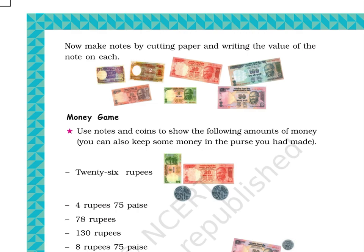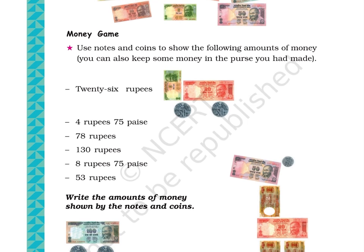Question 1 – Money Game. Instruction: Use notes and coins to show the following amounts of money. You can also keep some money in the purse you had made. Part A: 26 rupees – this part is solved as an example; the picture shows a 5 rupees note, a 20 rupees note, and 2 coins of 50 paise. Part B: 4 rupees 75 paise. Part C: 78 rupees. Part D: 130 rupees. Part E: 8 rupees 75 paise. Part F: 53 rupees.